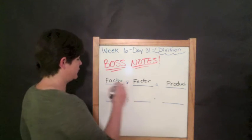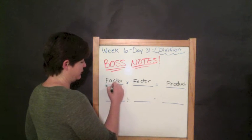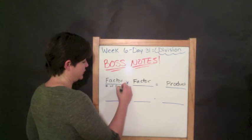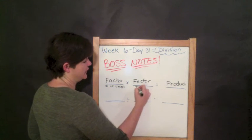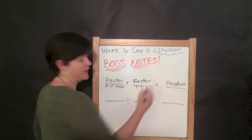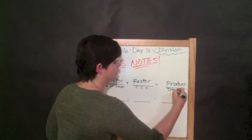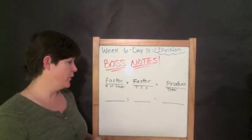Factor times factor equals the product. We've learned that. Go ahead and write it down again, though, just so we make sure. We also know that the number of groups times the things in each, we've been calling that TIE, equals the total. We know that for multiplication.